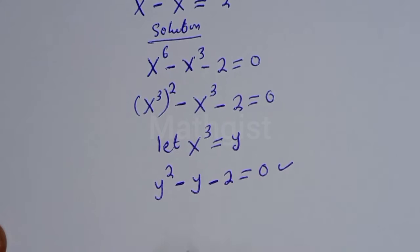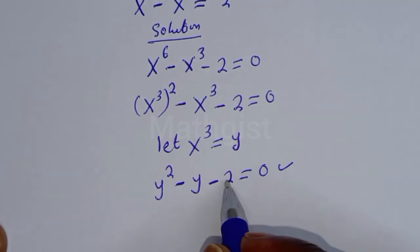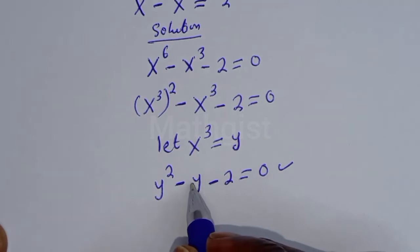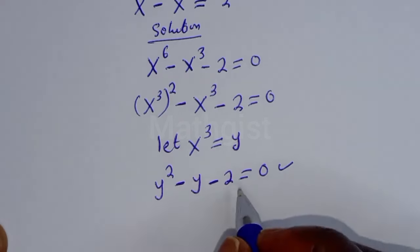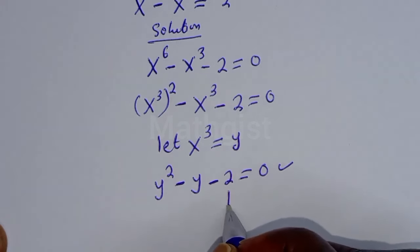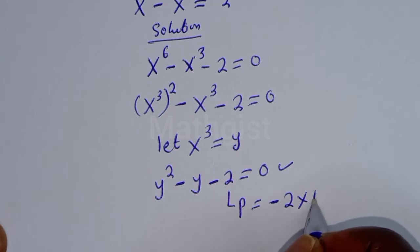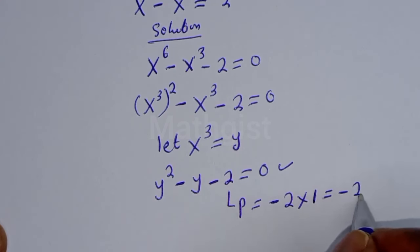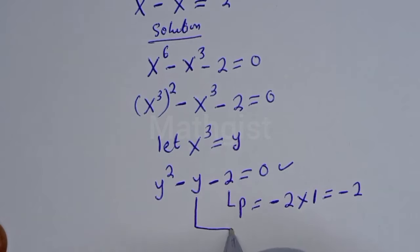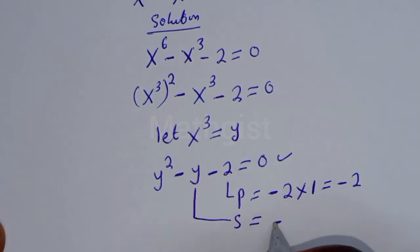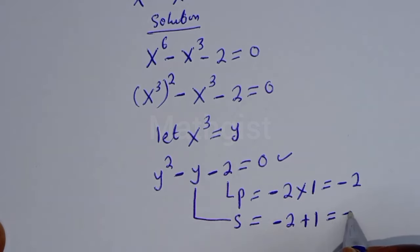Let's solve this using the factorization method. The product is minus 2 and the sum will be minus 1, because the coefficient of y is minus 1. The product equals minus 2 multiplied by 1, which is minus 2, and the sum equals minus 2 plus 1, which is minus 1.